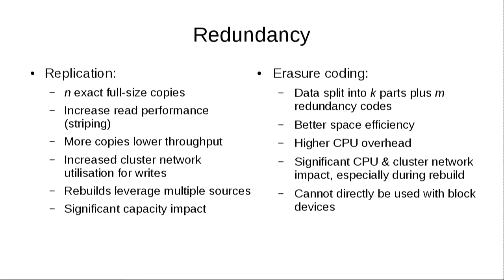In terms of redundancy, there are a couple of things you can do. You can use replication, which is basically like a RAID 1 — you get a certain number of exact full-size copies of your data. It's simple, it's fast, it gives you increased read performance through striping. The more replicas you configure, the lower throughput you'll have on writes and the higher cluster network utilization for writes. Rebuilds can leverage multiple sources. But there's a significant capacity impact — with a replica level of three, one-third of your disks are used for live data and the other two-thirds are redundant copies.